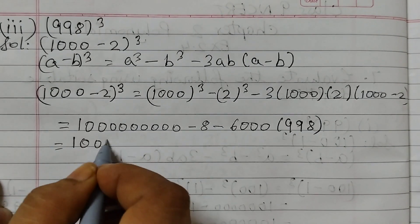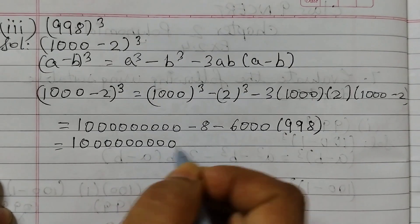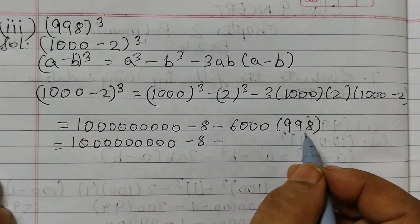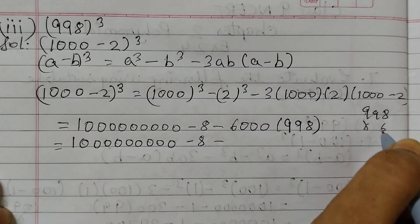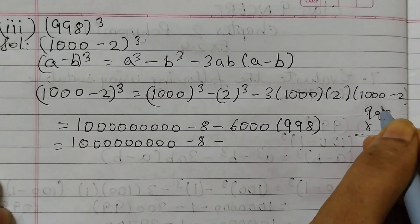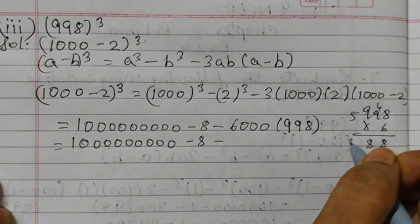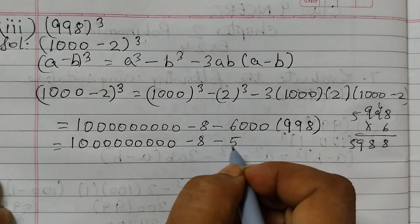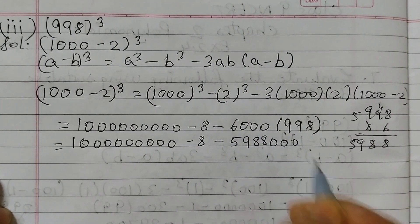So we need 6000 × 998. Calculating 998 × 6: 6 × 8 = 48, carry 4; 6 × 9 = 54 + 4 = 58, carry 5; 6 × 9 = 54 + 5 = 59. So 998 × 6 = 5,988, and with three zeros, 6000 × 998 = 5,988,000.